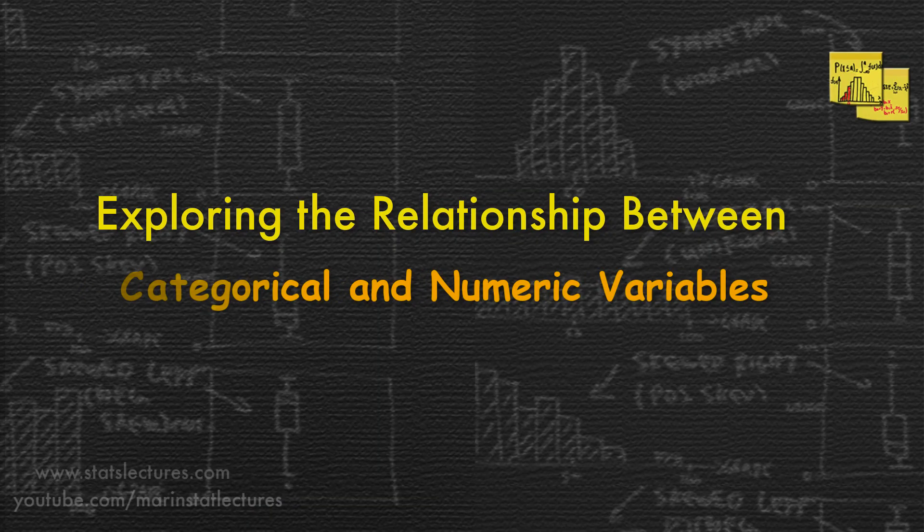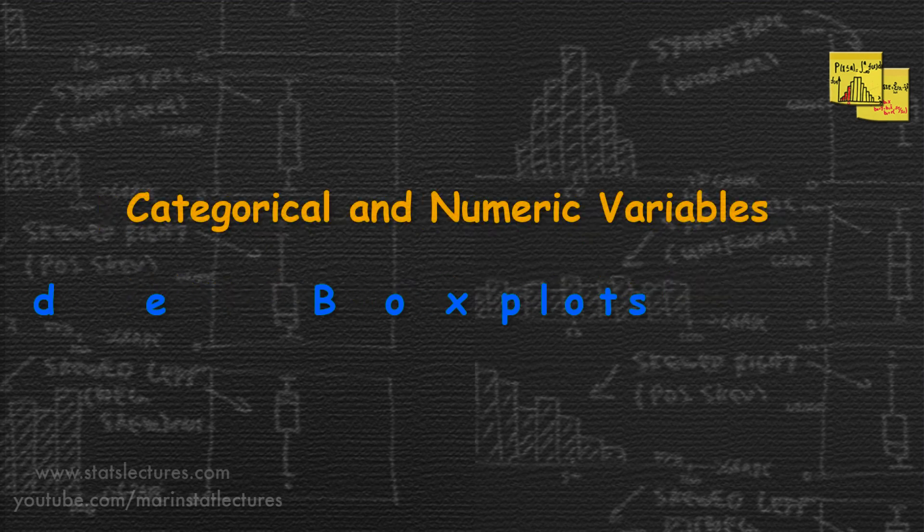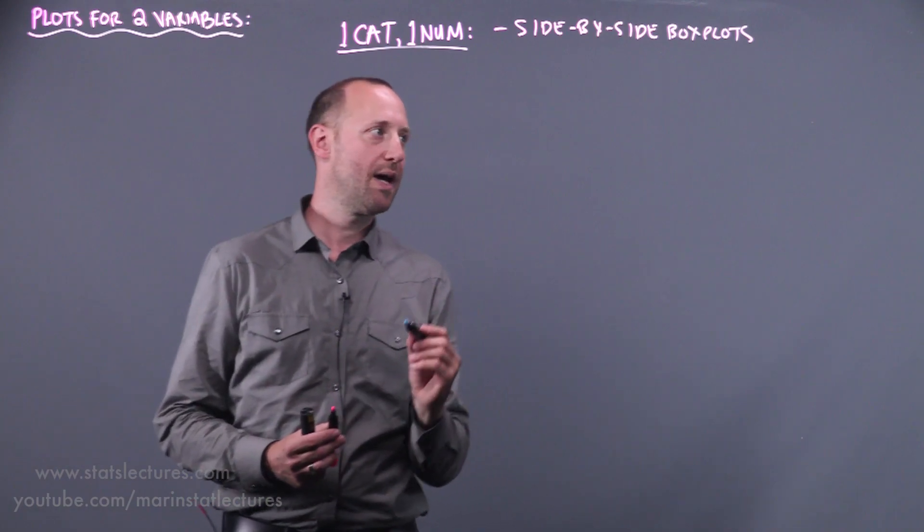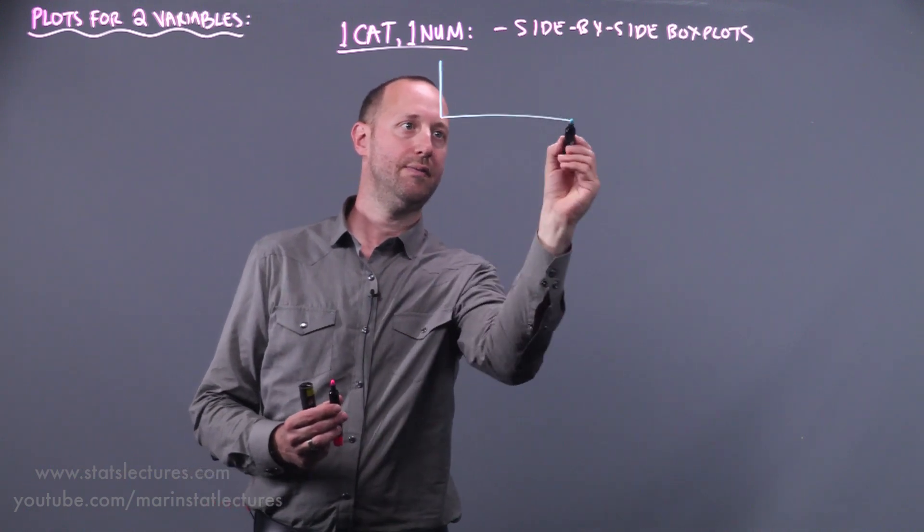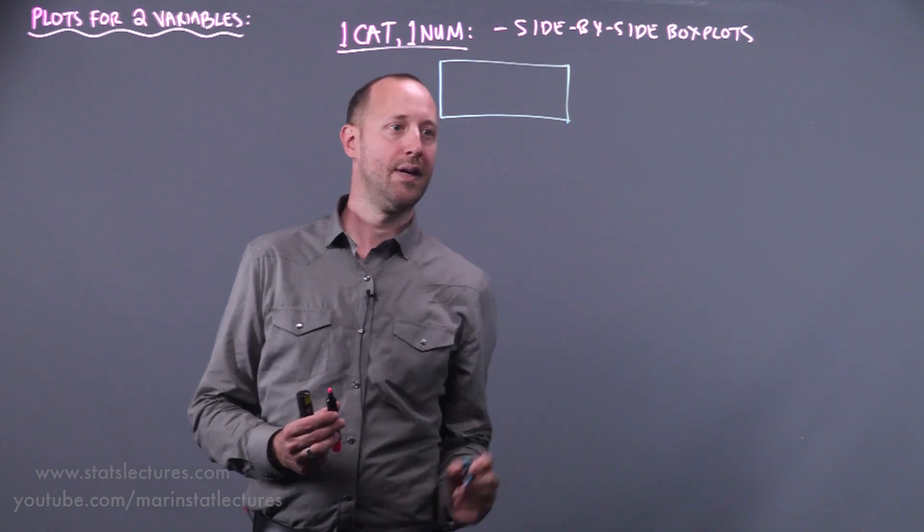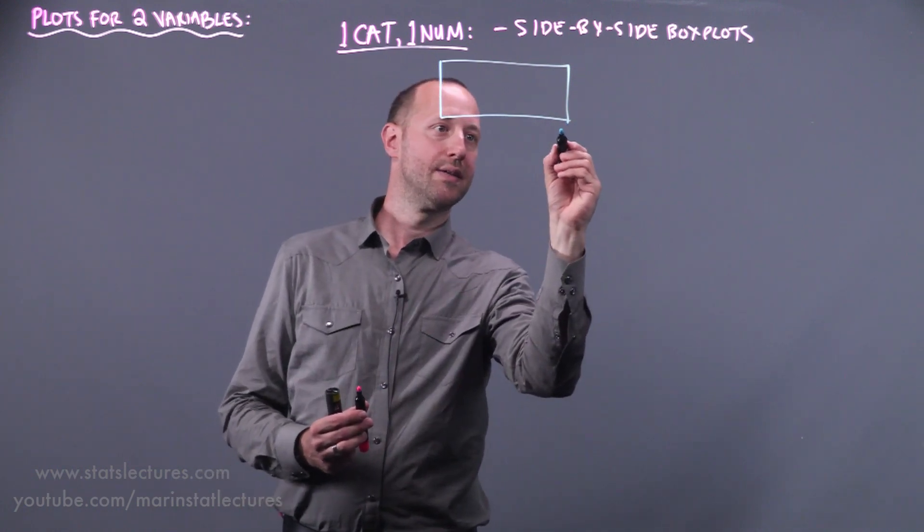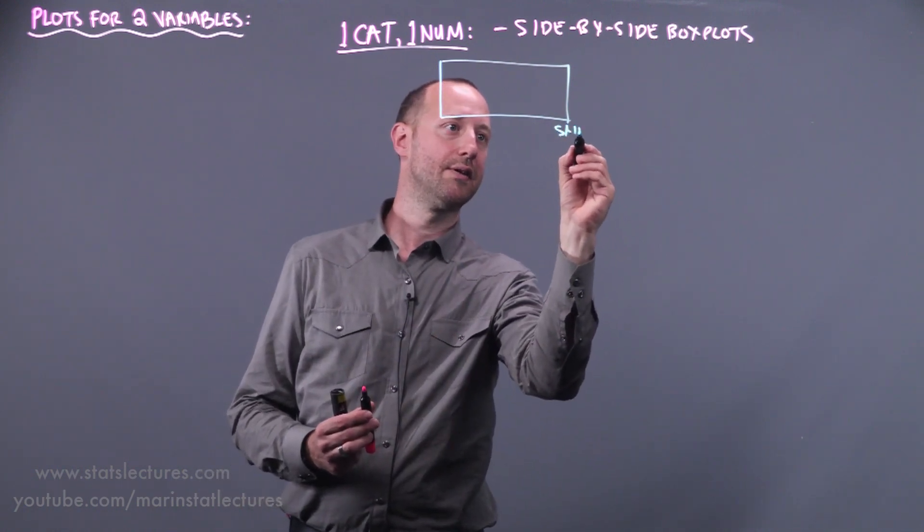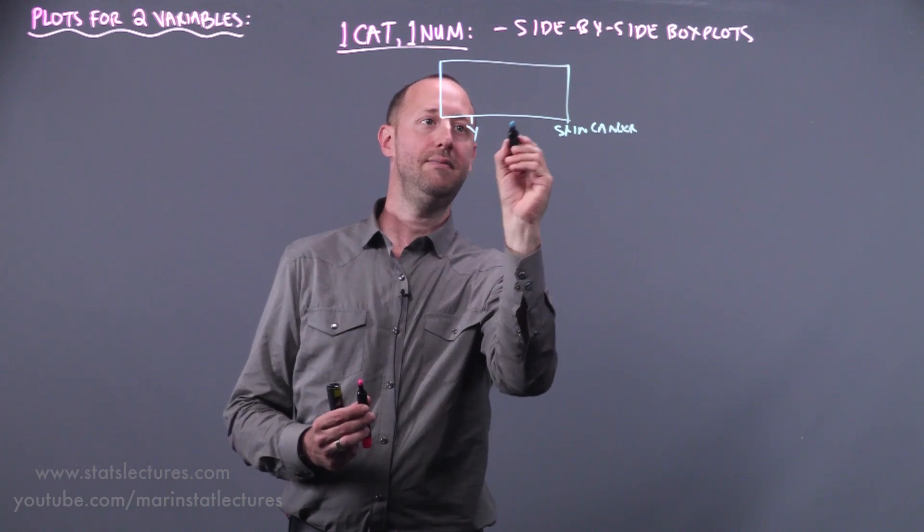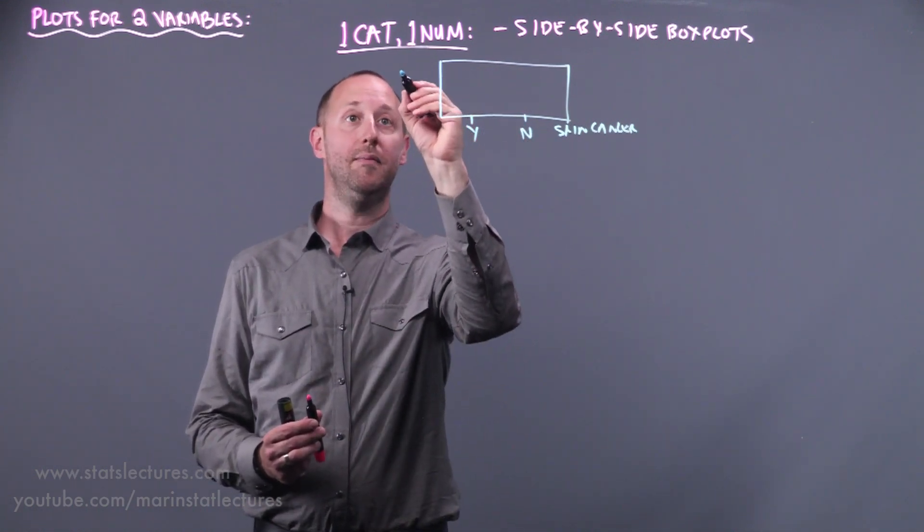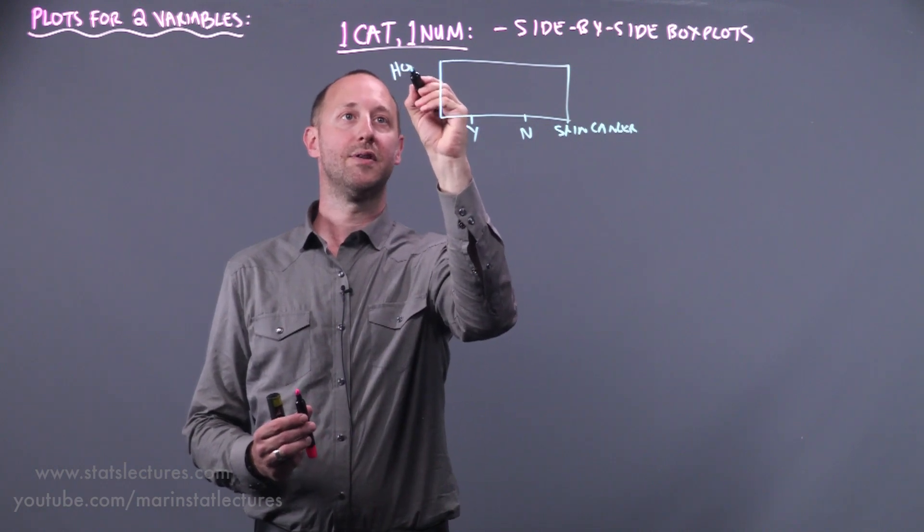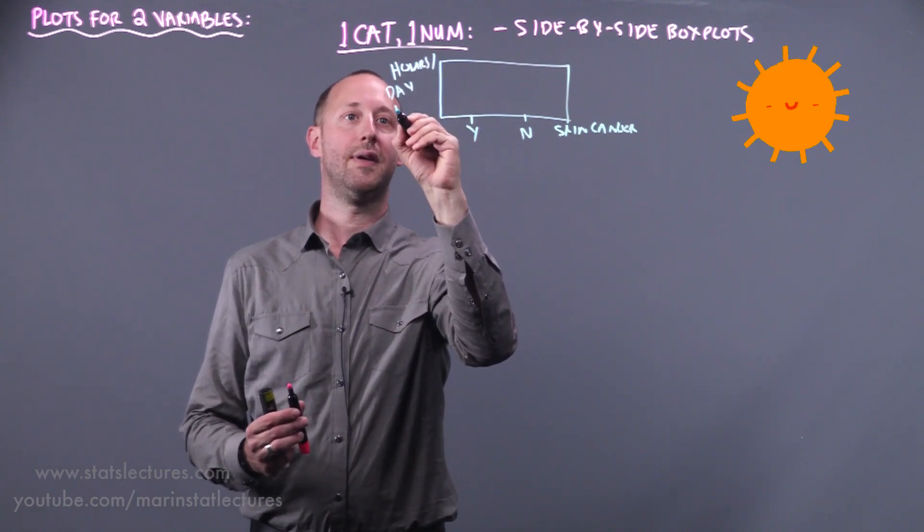So let's start off with one categorical, one numeric. The plot we can make here is side-by-side box plots. So one example we can think of is if, say, we were looking at does someone have skin cancer, yes and no, and the other variable, how many hours per day in the sun?